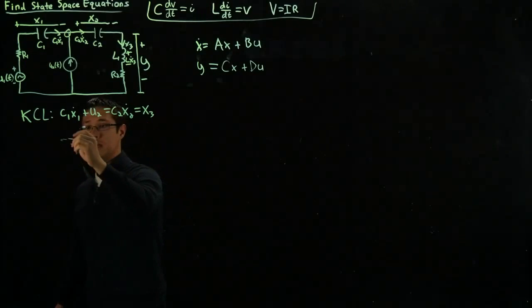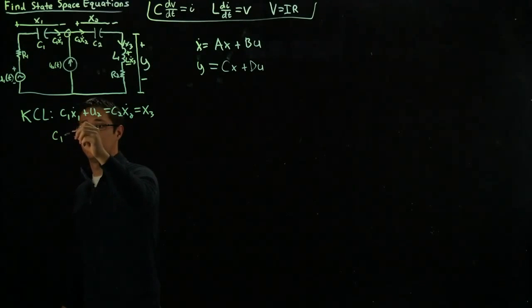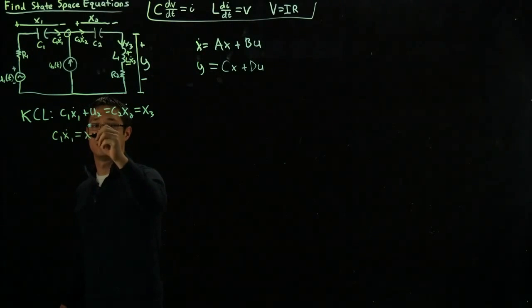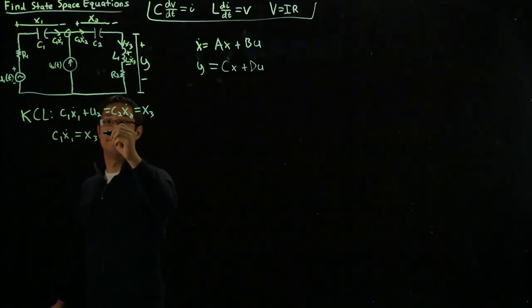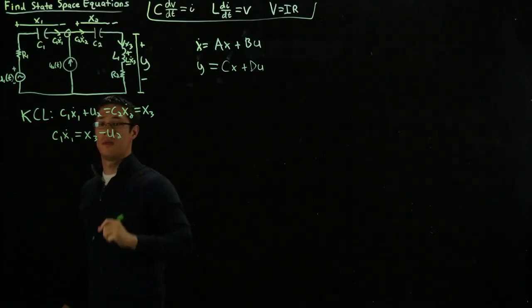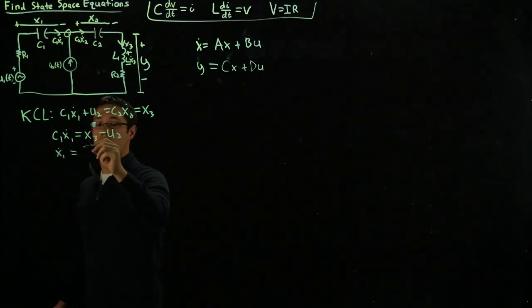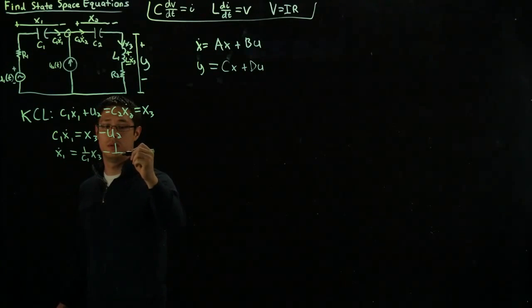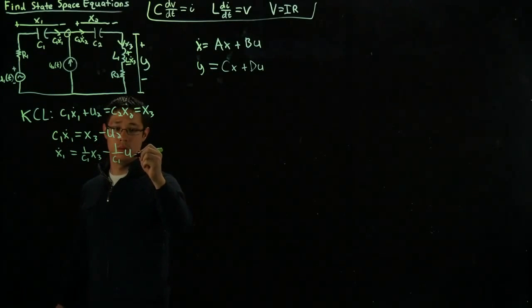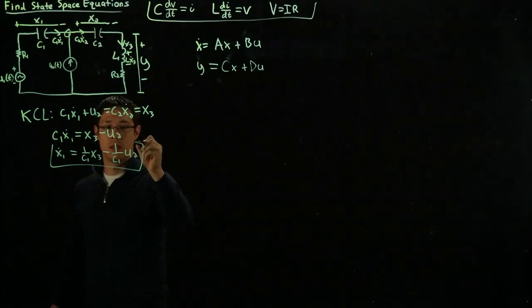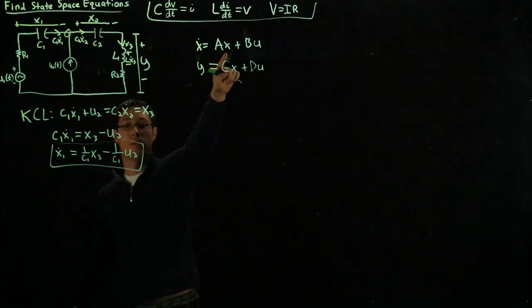First, if we isolate it, if I break this down, we have C1 x1 dot equals x3 minus U2. Further simplifying this, we have x1 dot equals 1 over C1 times x3 minus 1 over C1 times u2. This will go into our matrix.